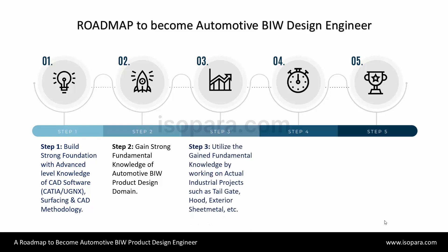In Step 3, you are going to get exposure to realistic projects by utilizing all the fundamental information and knowledge gained in Step 2 on actual industrial projects. These projects consist of front door, tailgate design, hood design, sheet metal parts, brackets, etc. These projects help you to understand the correlation between your gained knowledge and realistic projects.